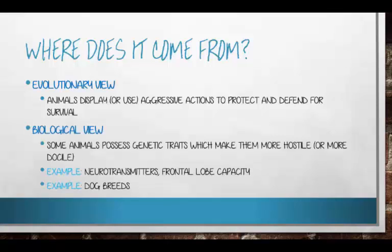Aggression can also be discussed in biological terms. There is evidence that some individuals are more aggressive by nature of the genes and neurological equipment they've inherited. For example, in men and women who are more violent, we find different functioning in the frontal lobe — the area responsible for self-control and impulse control, problems also seen in people with addiction issues.